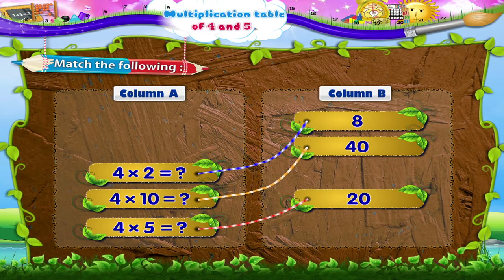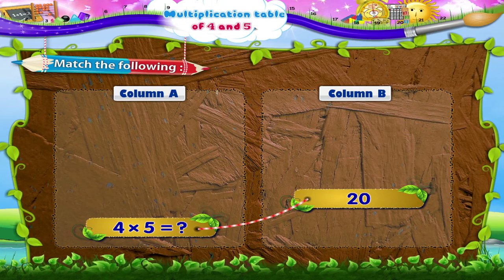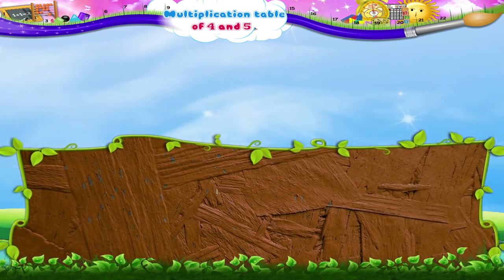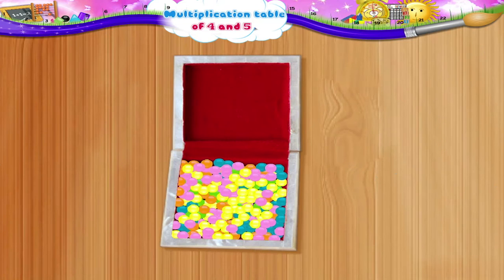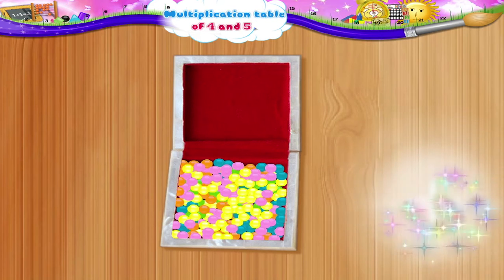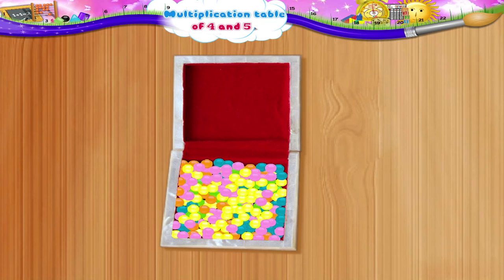Hey, hey, Starry, wait — where are you going? Great, we have to count the yellow coloured beads left in the box. I have an idea — let us count these beads in groups of five each.